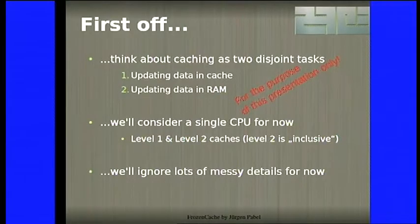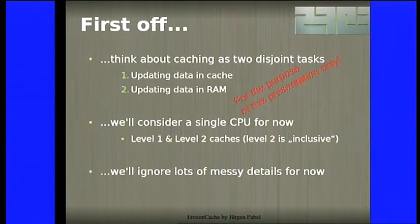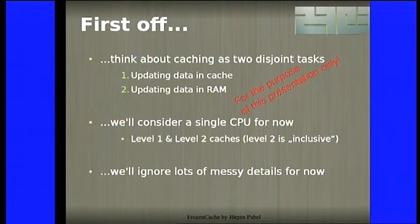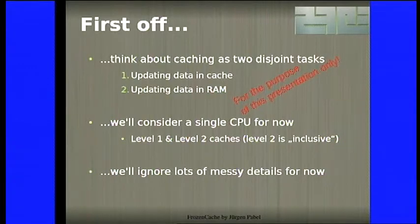Extracting data from the cache isn't easy — there's no real interface to ask the CPU for it. Even if you could, once you lose power to the CPU and reapply it, initialization clears the cache — something RAM doesn't do itself. For simplicity, we'll think of caching as two tasks: loading data into the cache, and writing it back out to RAM. We'll focus on a single-CPU, single-thread system for now.